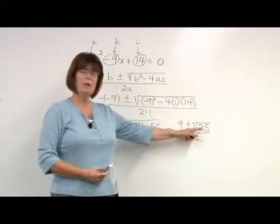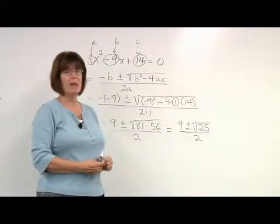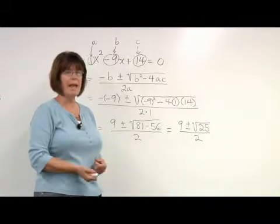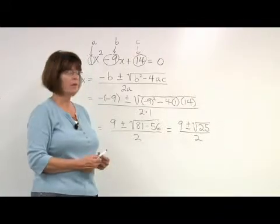The square root of 25 can either be a positive or a negative 5, because both 5 squared and negative 5 squared will give us 25.